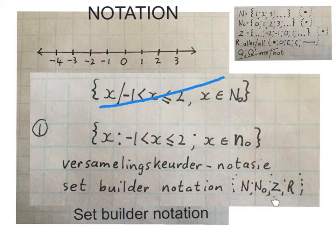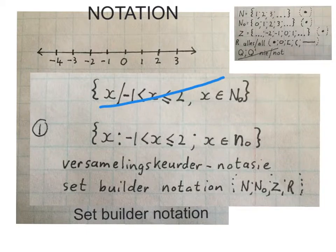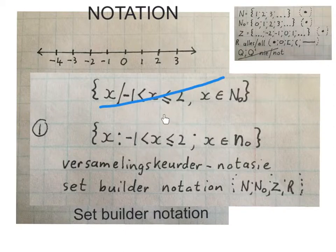Set builder notation is used in natural numbers, whole numbers, integers, and real numbers — there's no limitation on where you can use it. The first very important fact: if I asked you where do you start reading this notation, automatically people will go here. No — very important in math, start at the back. So we start over here and put all the whole numbers in your head, then you wait.